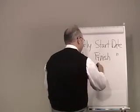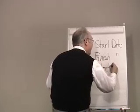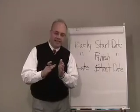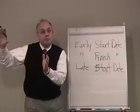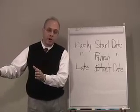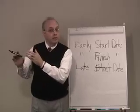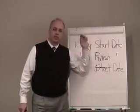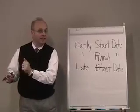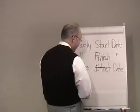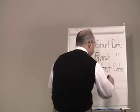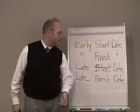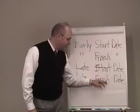Another calculated date is the late start date — the latest date any activity could start and still finish by the date established for completion of the project, typically the contract completion date. The late start date is the latest we could start and still finish by the anticipated date. Similarly, the late finish date is the latest date we can finish the activity and still complete the project on time. Essentially, the late start date plus the duration of the activity equals the late finish date.